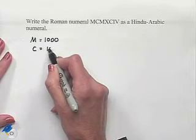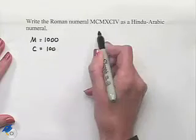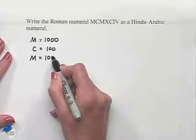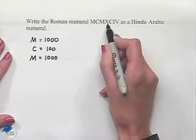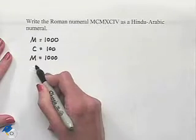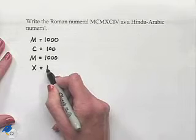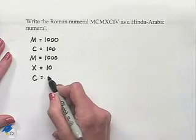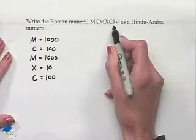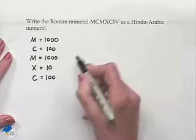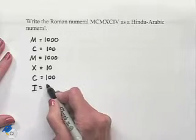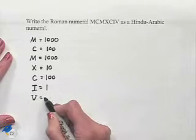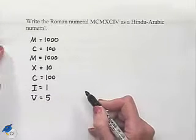Our next M is again 1000. We have an X, which gives us a value of 10. Our C is equal to 100. We have an I, which is equal to the number 1, and we have a V which is equal to the number 5.